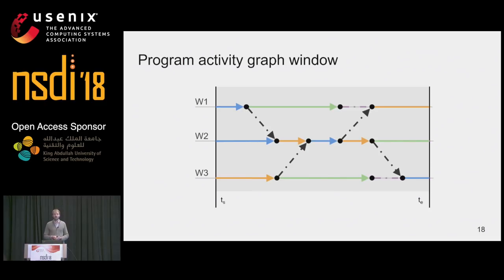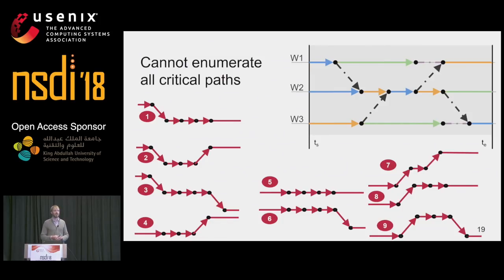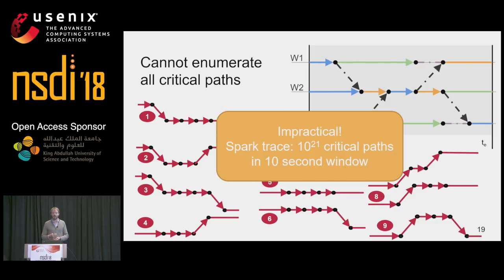Here we have a program activity graph with clearly defined start and end points — it starts at TS and goes to TE. This means that all critical paths contained in that window have the same length: they all go from TS to TE. This also means the number of critical paths contained in that window is potentially much higher. Let's try to enumerate all critical paths in one window. In this short window, we already have nine different critical paths. In reality there are many more activities, and we have Spark traces where a 10-second window contains on the order of 10^21 different critical paths — so it's not practical to enumerate all of them.